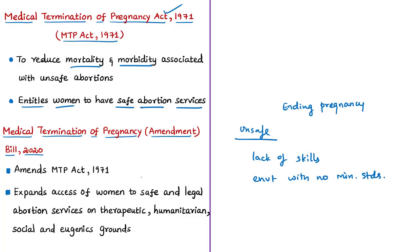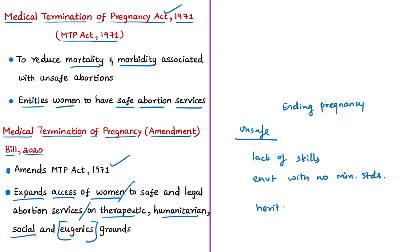The 2020 bill aims to amend the MTP Act of 1971 to expand access of women to safe and legal abortion services. It also aims to provide abortion services not only on therapeutic grounds and humanitarian or social grounds, but also on eugenics grounds. Eugenics refers to the science of improving a population by controlled breeding — increasing occurrence of desirable heritable characteristics and discouraging reproduction of persons with genetic defects or presumed undesirable inheritable traits.